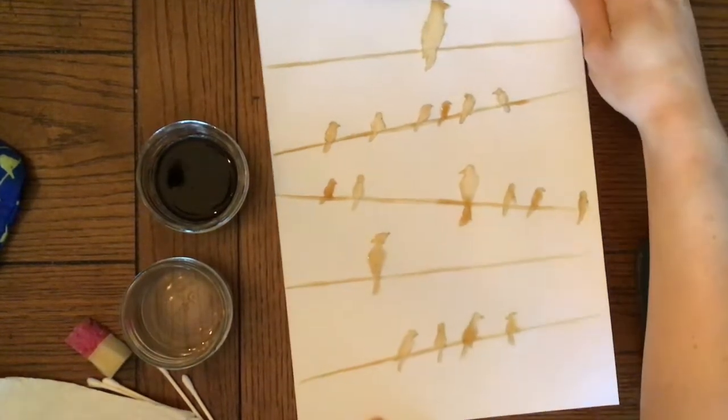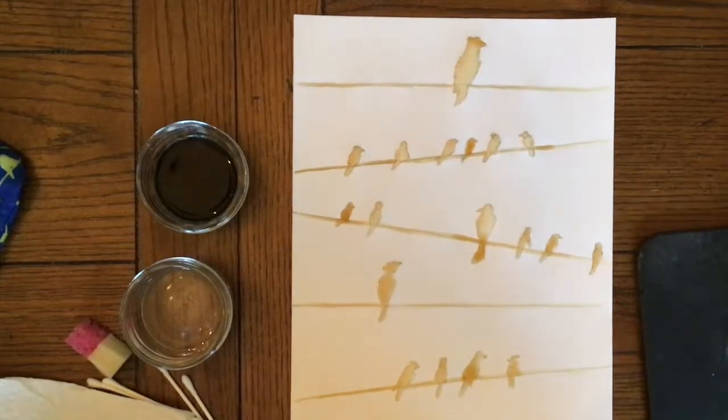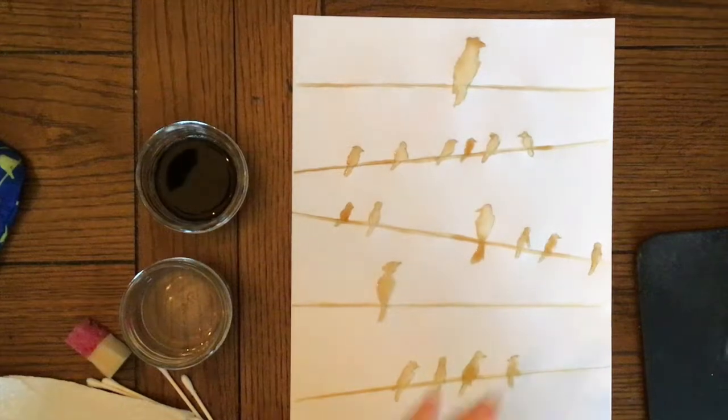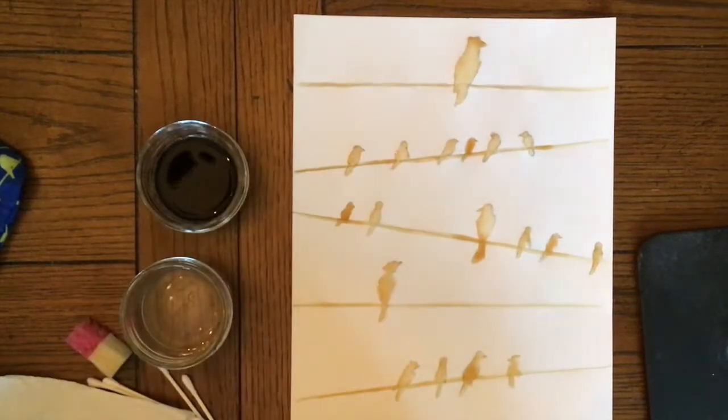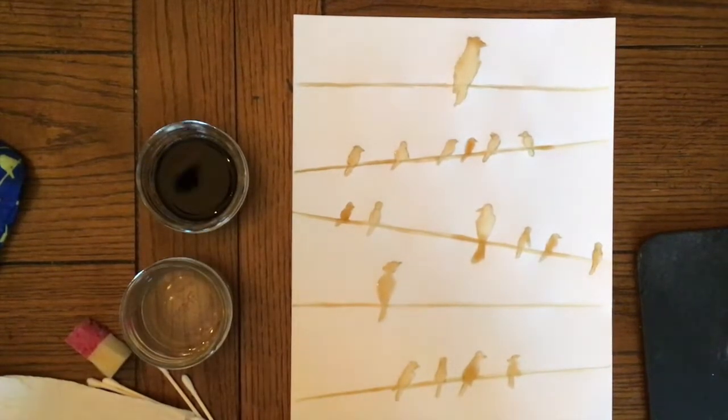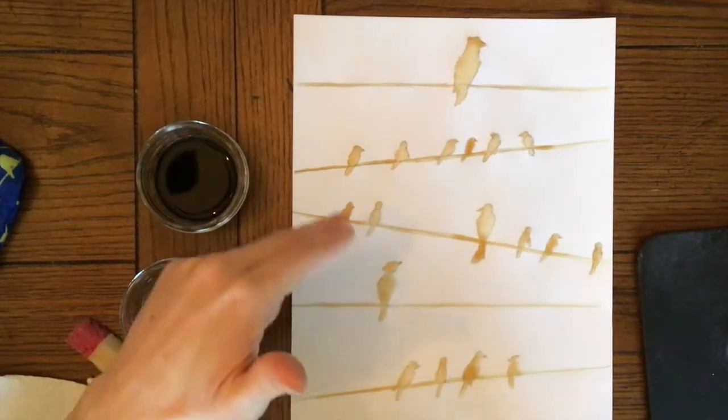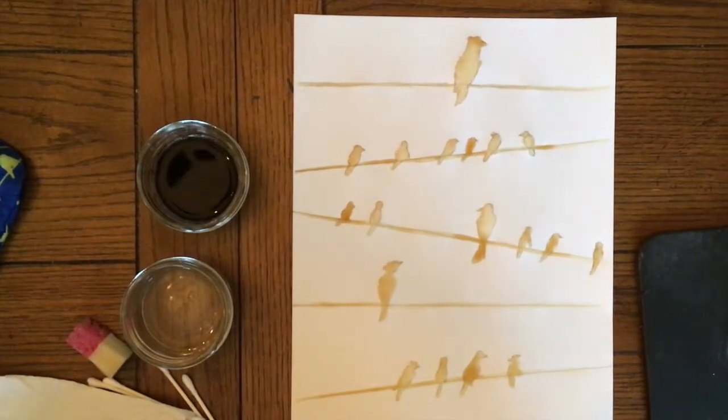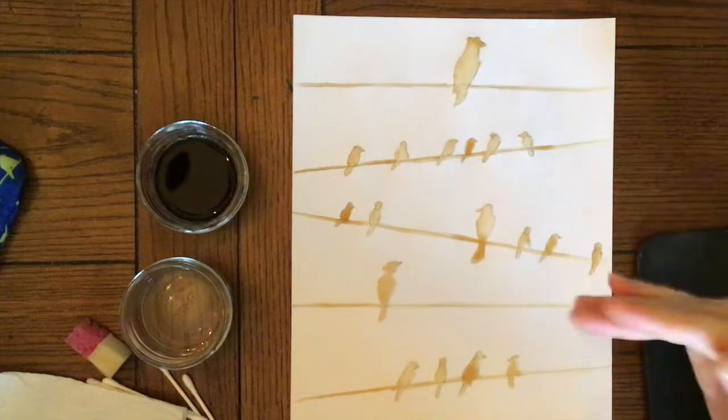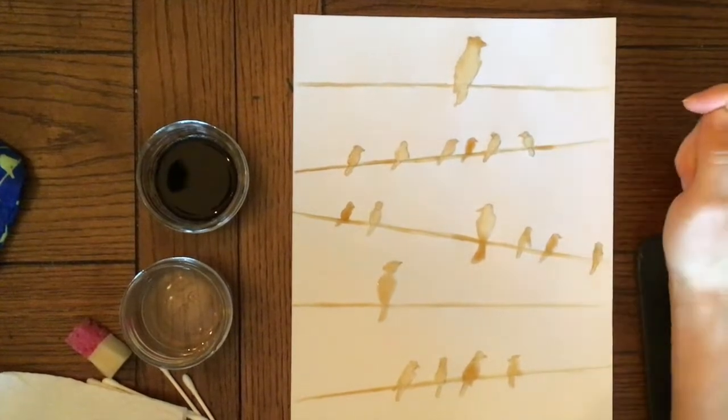So you can see I have my first layer here of my coffee painting. I really like the way it looks, but when I squint my eyes and look at it, I see the value better—which is the lightness and darkness—and I see they're all about the same value or shade of brown. So I'm gonna let it dry for a few minutes and then come back and add another layer where I do want the birds to be darker.